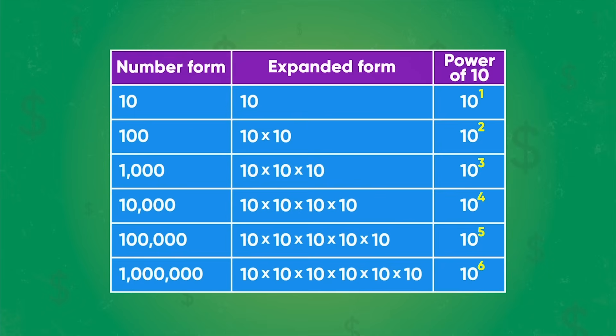Yes, anything else? How many zeros there are in the number is the same as the number in the power of ten. Great observation. Another pattern is that each time you multiply by ten, the digits shift one position to the left.